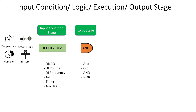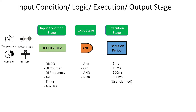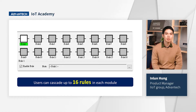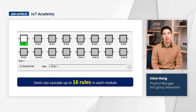Second, logic — there are four types of logic gates: AND, OR, NONE, and NOT. Third, execution — you can choose the execution period starting from one millisecond. Fourth, output stage — there are a few output types you can choose, such as DO set to true to turn on a light or send a message. Users can configure up to 16 rows in each module. Logic rows in GCL can be applied to different modules, and it is also very easy to monitor the running process and test the function in the utility.